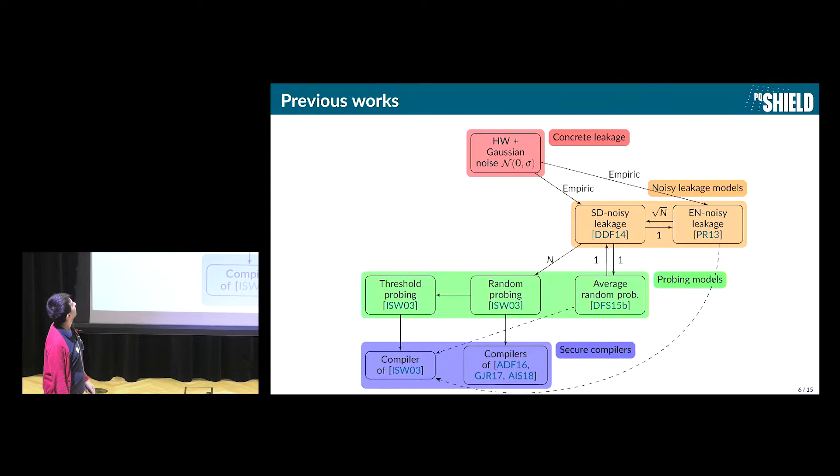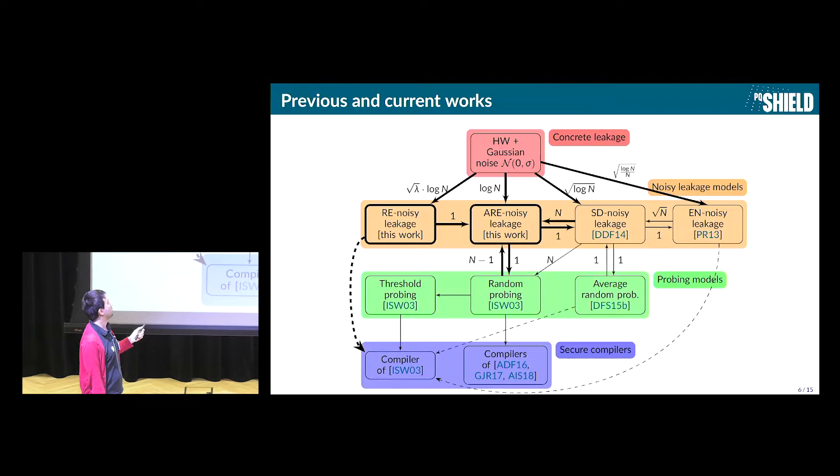So instead what people do typically is that they will first prove it in the probing model, then use a reduction between probing models and noisy leakage models, and then reduction to a concrete leakage modelization. And what we want to do is to do this chain of reductions the most efficiently possible. So this is an overview of the previous works. So it's not an exhaustive overview, of course, but so for concrete leakage, we will consider the Hamming weight plus Gaussian noise. Noisy leakage models, two of them were proposed, which are the one based on the total variation distance or statistical distance, and the one based on the Euclidean norm. Probing models, three of them were proposed, and a few compilers were proposed. And as you can see, there were a few reductions which were done, but the picture was a bit incomplete.